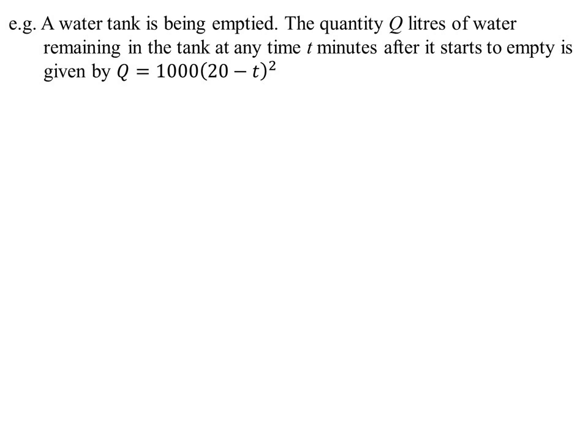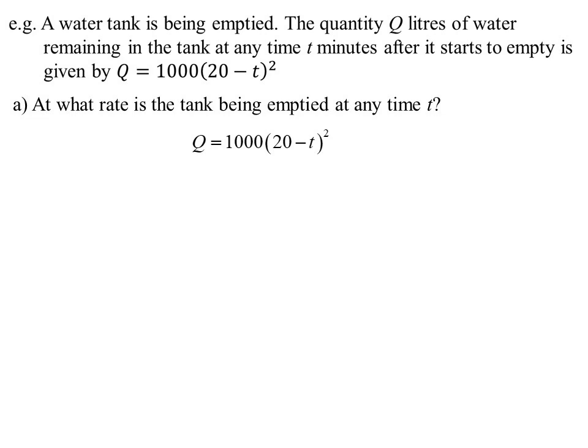Here's an example. So we got a tank of water, it's being emptied, Q litres of water at any particular time, and we know that the actual volume is given by this. So Q equals a thousand, 20 minus t all squared. So the first question we want to know is, well what's the rate that this tank is emptying at any particular time? Well if Q is that, and we want to know the rate of change of Q as time goes along, essentially it's saying what is dQ/dt? How does the quantity change as time changes? So we just differentiate.